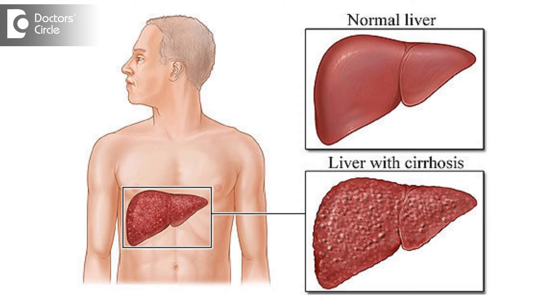These HCV genotypes are treated by combination antiviral therapy. Genotype 2 is more drug responsive than genotype 3. It also depends on whether cirrhosis has already occurred in the liver due to the hepatitis C infection. In cases where cirrhosis has already occurred, the duration of treatment has to be longer — 24 weeks.